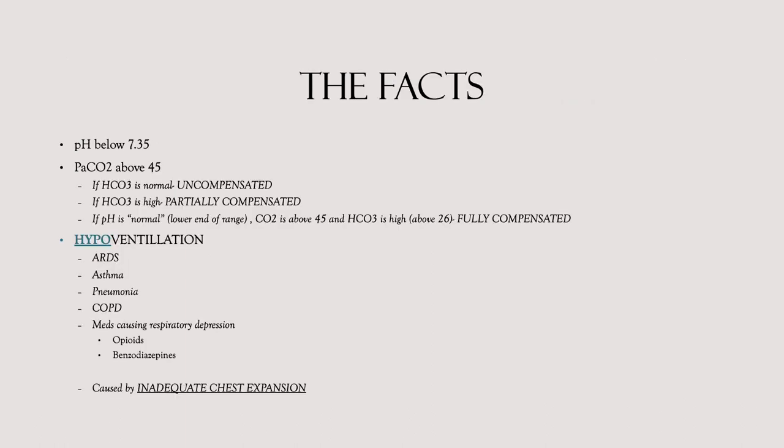Regarding the pH in respiratory acidosis: your pH is going to be below 7.35, and your PaCO2 or carbon dioxide is above 45. Now let's talk about compensation — this always has to do with your bicarb or HCO3. So your HCO3 normal range is 22 to 26. If your HCO3 is between 22 and 26 and the patient has pH below 7.35 and CO2 above 45, and that bicarb is normal, you're uncompensated.